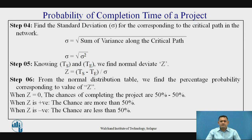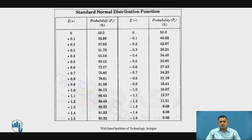Finally, knowing ts (scheduled completion time) and te (expected completion time), we can find the normal deviation z using the formula: z = (ts - te) / sigma, where sigma is the standard deviation. When we get the normal deviation z, we use it to find the probability completion time of the project in percentage by referring to the standard normal distribution function table, which lists z values along with the corresponding probability completion percentages.